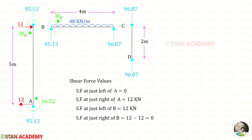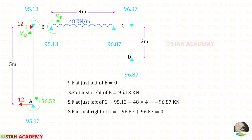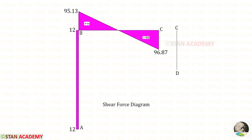We can draw the shear force diagram directly, or first draw the free body diagram and from that calculate the shear force values. These are the shear force values for column AB and for beam BC. In column CED there is no perpendicular load, so there will be no shear force. This is the shear force diagram.